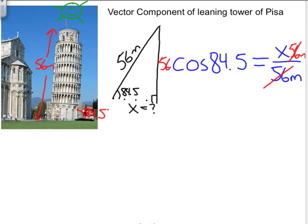And now we're left with 56 meters times cosine of 84.5 degrees. Oops, smart board's not as quick as I am.